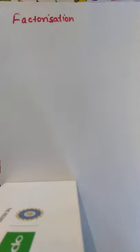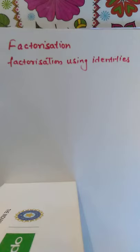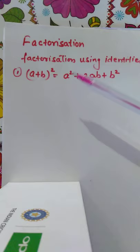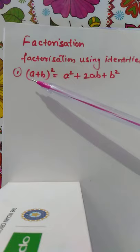Students, this chapter is on factorization. Today in this video we will study about the factorization of algebraic expressions using identities. If you remember, we have read about three identities. The first is: a plus b whole square equals a squared plus 2ab plus b squared, which can be written as a plus b into a plus b — the product form.